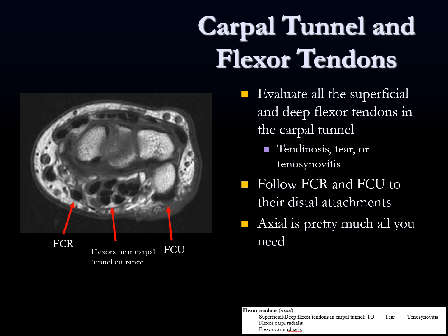Here's the carpal tunnel and flexor tendons. This is an axial T1-weighted image of the wrist. We want to evaluate all the superficial and deep flexor tendons in the carpal tunnel, looking for tendinosis, partial tears, full thickness tears, and tenosynovitis. It's pretty easy to follow the flexor carpi radialis and flexor carpi ulnaris muscles to their attachments. We have deep and superficial tendons, and then we have the median nerve. The reading pattern checklist covers the superficial and deep flexor tendons, the FCR and FCU.